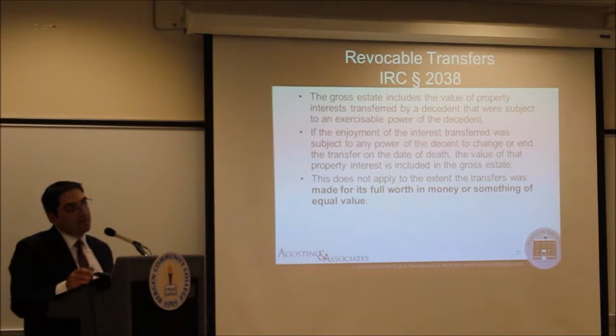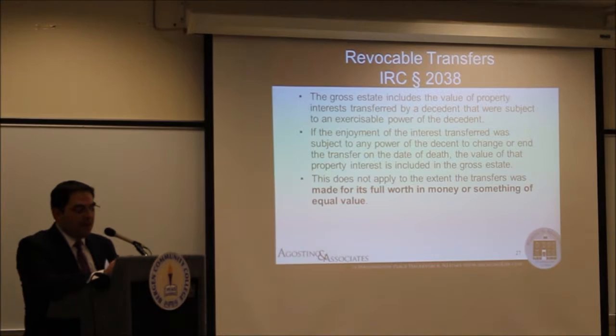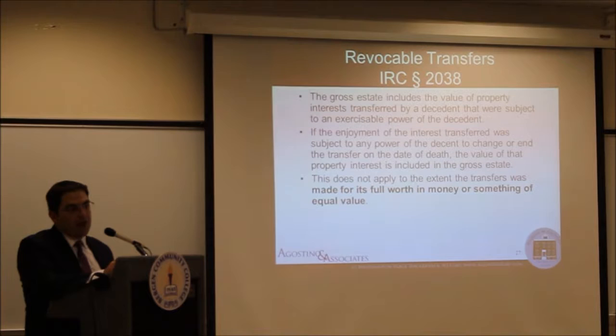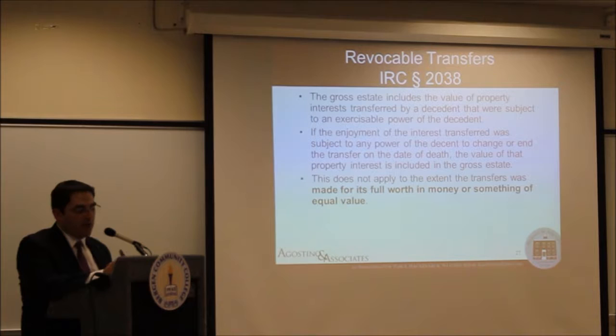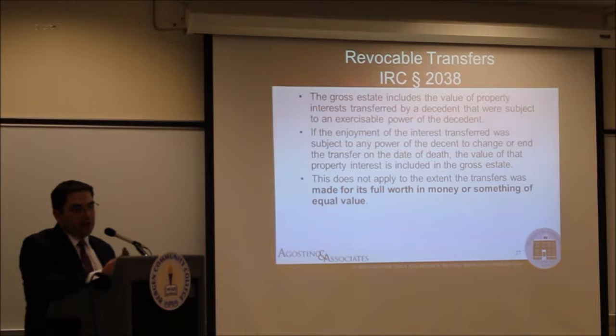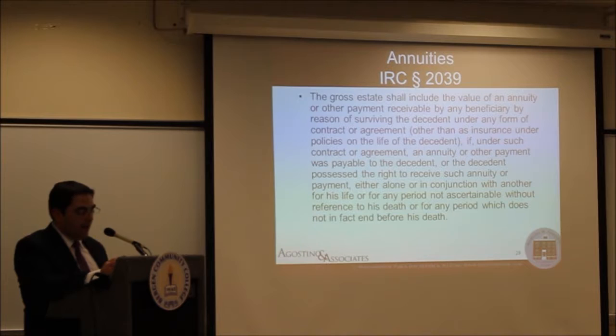Moving along to Section 2038, revocable transfers. The decedent's gross estate will include the value of property interest transferred by the decedent that were subject to an exercisable power in favor of the decedent. The typical situation is transfers to a revocable trust. Each of these code sections corresponds to a schedule on Form 706. Section 2038 is reportable on Schedule G of Form 706. Again, if the decedent transferred property for adequate and bona fide consideration, that transfer will not be includable in the decedent's estate.